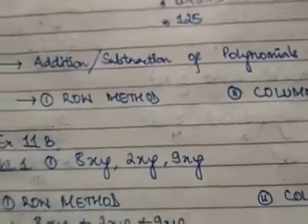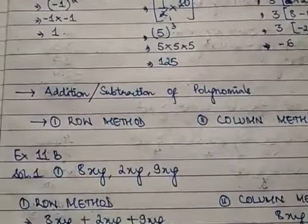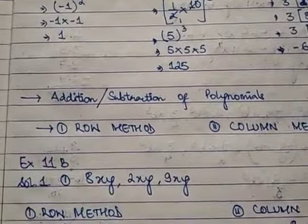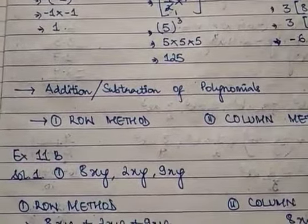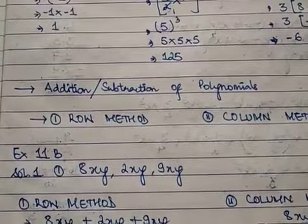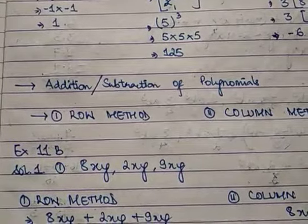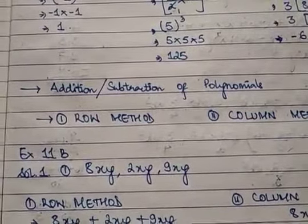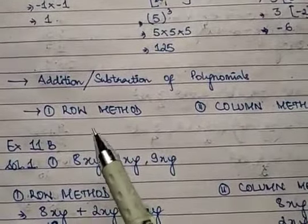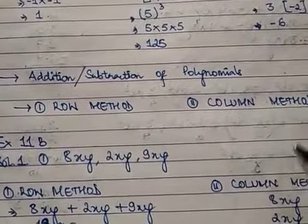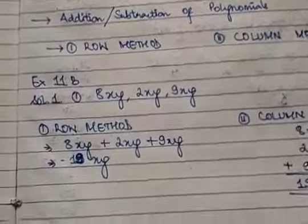I hope you understood that. Now we move on to addition and subtraction of polynomials. This is very important because the same basics will be followed through Class 10 and even higher levels. Addition and subtraction of polynomials can be done in two ways: the row method and the column method. We'll do both — whichever you find easier, you can use.